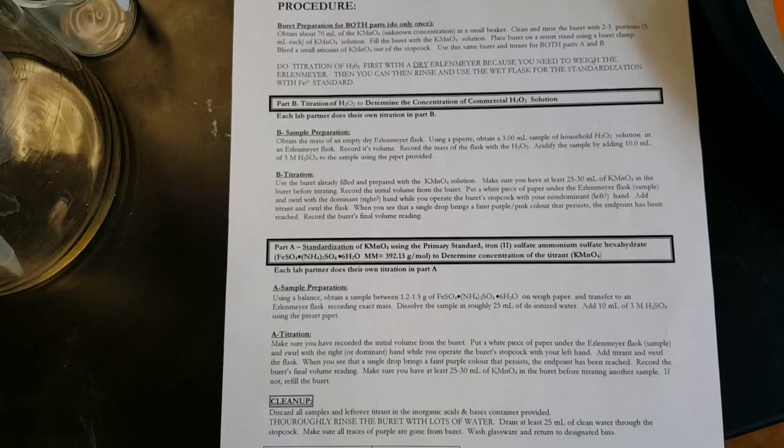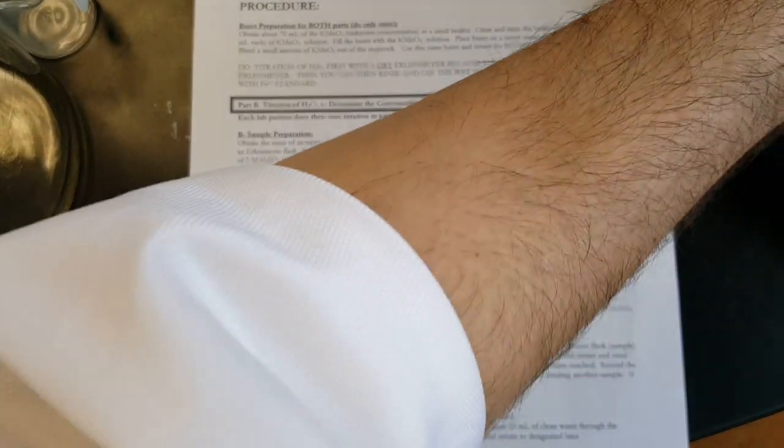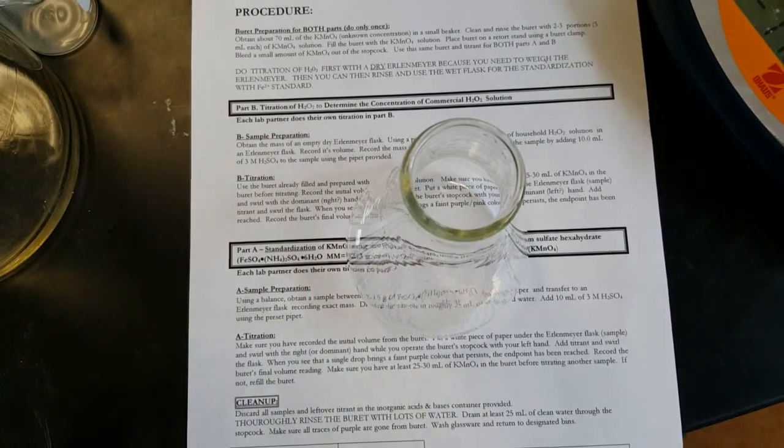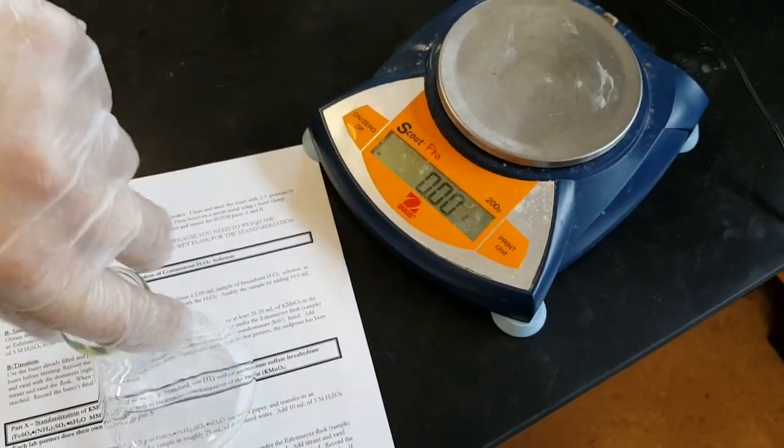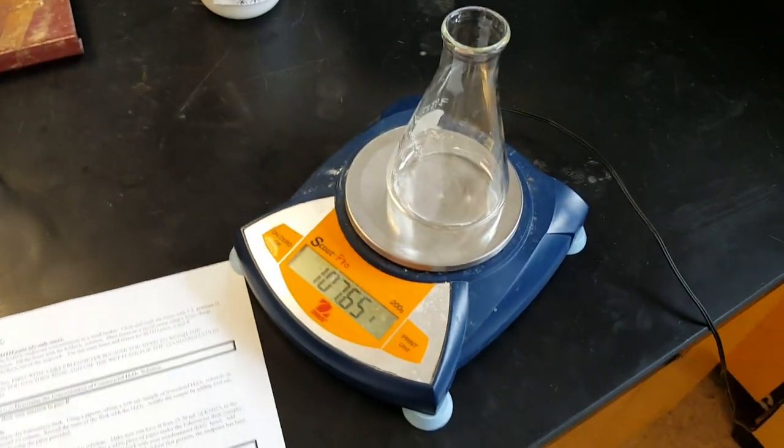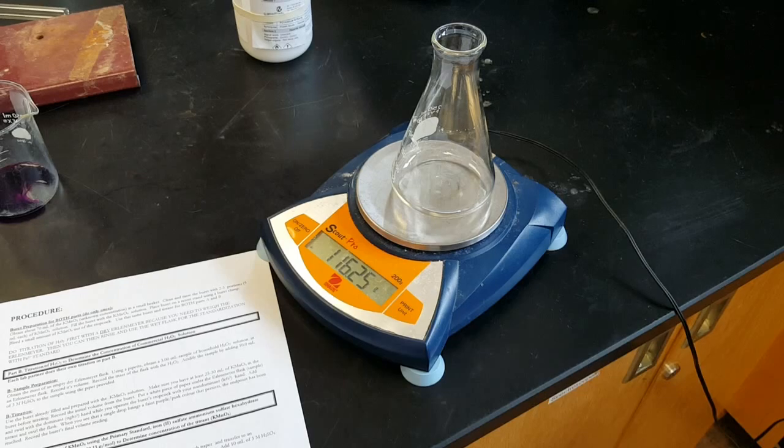It says obtain the mass of an empty dry Erlenmeyer flask. So there's my dry Erlenmeyer flask. I'm going to go over here. I obtain the mass, which is in this case, 116.24.